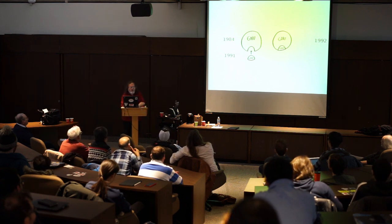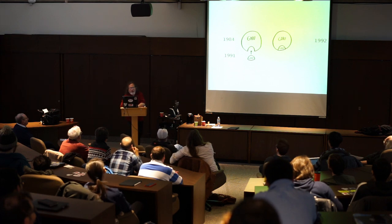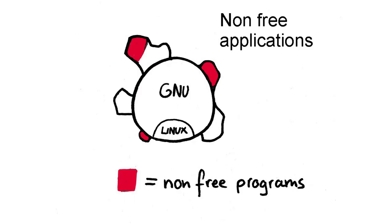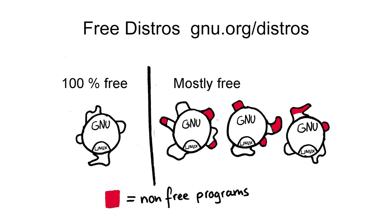GNU/Linux in principle is a free system, but in practice usually not. There are thousands of variants called distros, each with its own development team deciding what programs to include — most put in some non-free programs, resulting in a variant that is not a completely free operating system. There are thousands of non-free distros and around 10 free distros. Look at gnu.org/distros for details. If you want to be sure you're not installing any non-free software, pick one of the free distros listed there.